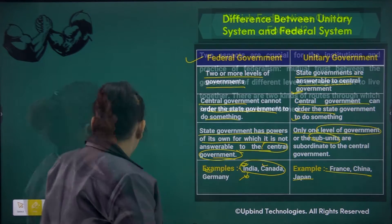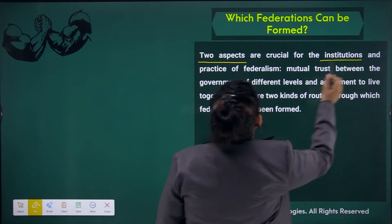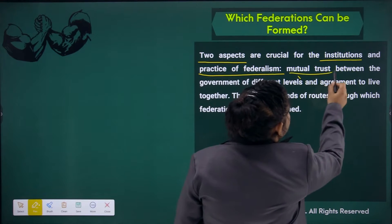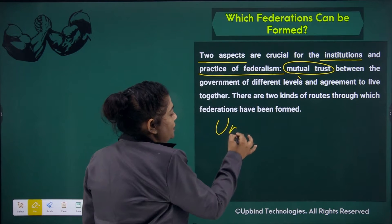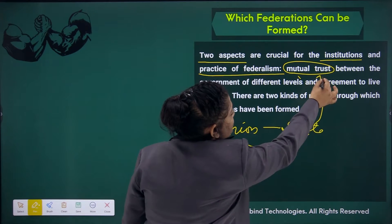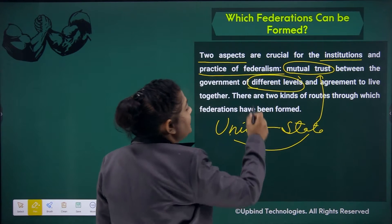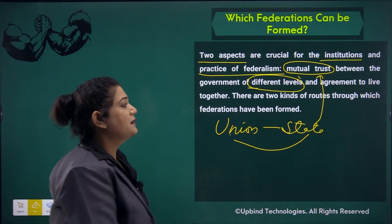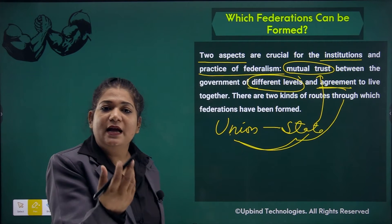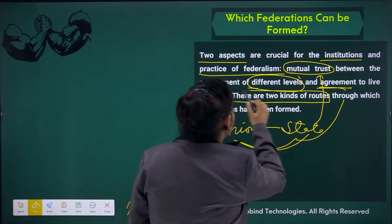There are two aspects for institutions that practice federalism. First, there must be mutual trust between them — if distribution has happened between union and state, then mutual trust between them is very important. When different levels of government rule, both agree and work together — you can say it's a policy of mutual trust, and they have to work together to run the country.